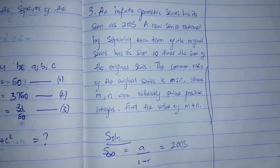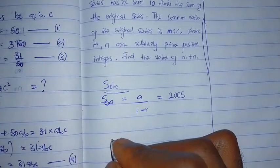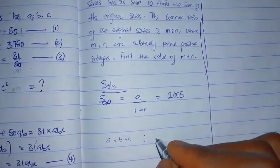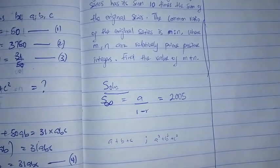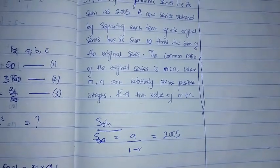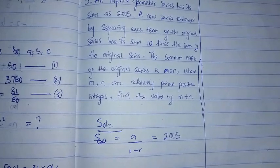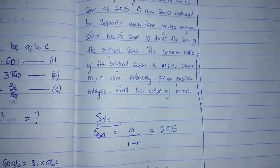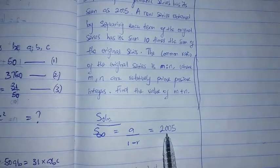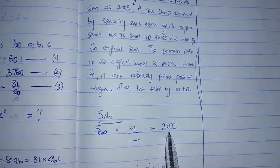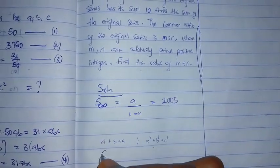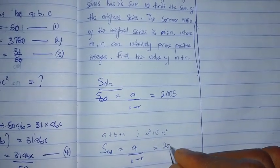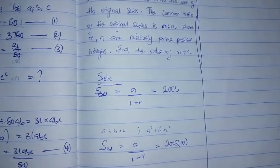If the first series is A plus B plus C, the new series obtained by squaring each term becomes A² plus B² plus C². They said the new series obtained by squaring each term has its sum 10 times the original series. So the sum to infinity of the new series equals 10 times 2005, which is 20050. The formula for this new series sum is also a over (1 minus r), just with the new ratio.